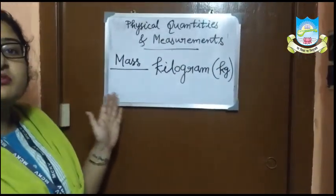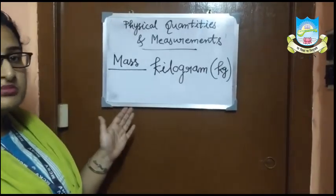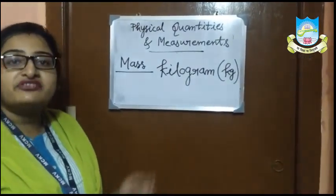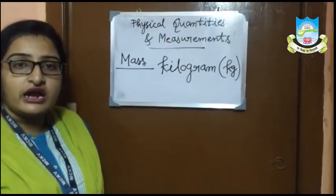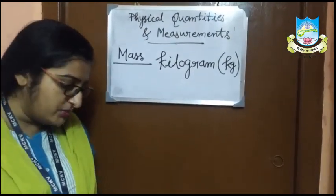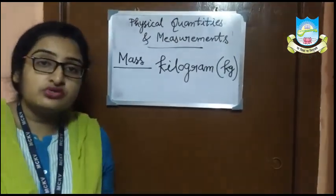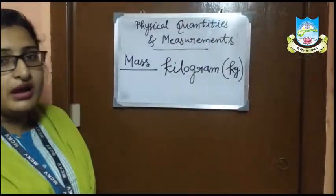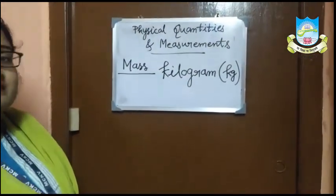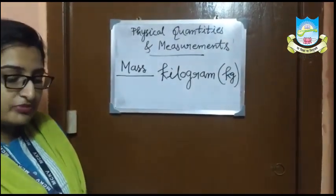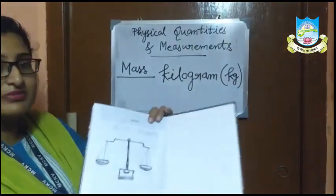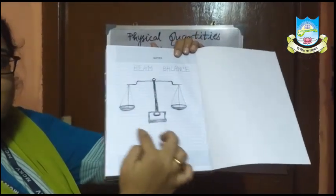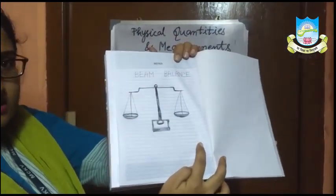Gram, centigram, and milligram are the submultiples of kilogram. Metric tonne and quintal are the multiples of kilogram. We use a beam balance or physical balance for the measurement of mass. You must have seen a beam balance in a grocer's shop. Here I am showing you the diagram of the beam balance — this is how a beam balance looks.